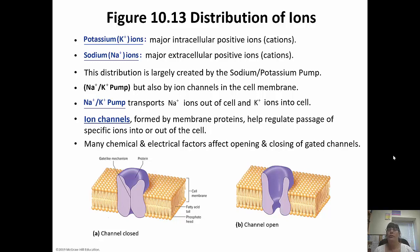Sodium ions are the major extracellular cation — outside the cell. So inside the cell you have more potassium, outside the cell you have more sodium. This distribution is created by the sodium-potassium pump. Once an action potential fires and it's all over with, the distributions are off. So the sodium-potassium pump comes in and pumps three sodium out of the cell and two potassium into the cell to restore their concentrations.